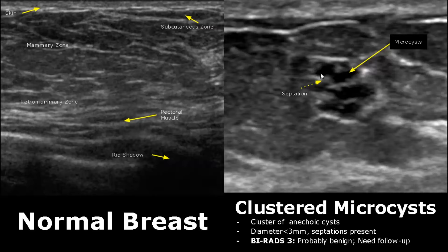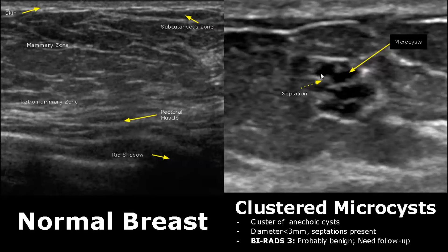Clustered microcysts will have a group of cysts clustered together. The diameter is less than 3 millimeters and septations may be present. It is rated as BI-RADS 3 because follow-up is required.